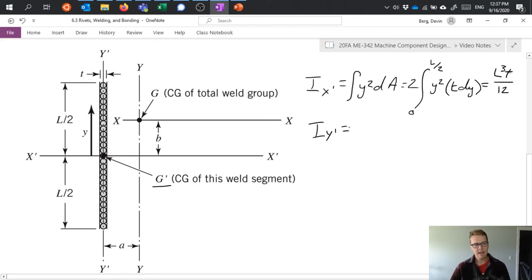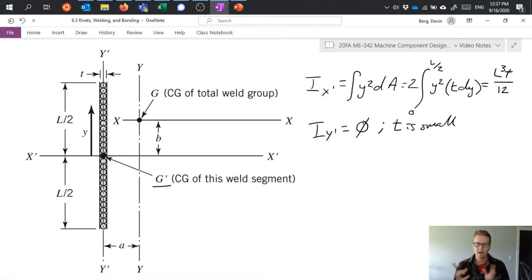What about Iy prime? Well, we can calculate that, but generally, I'm actually going to say, in this case, Iy prime is equal to 0. And that's because t is relatively small. So because t is small, my contributions as I move away from the y-axis are very small. So I'm going to come up with a very small equation here and it's effectively negligible.